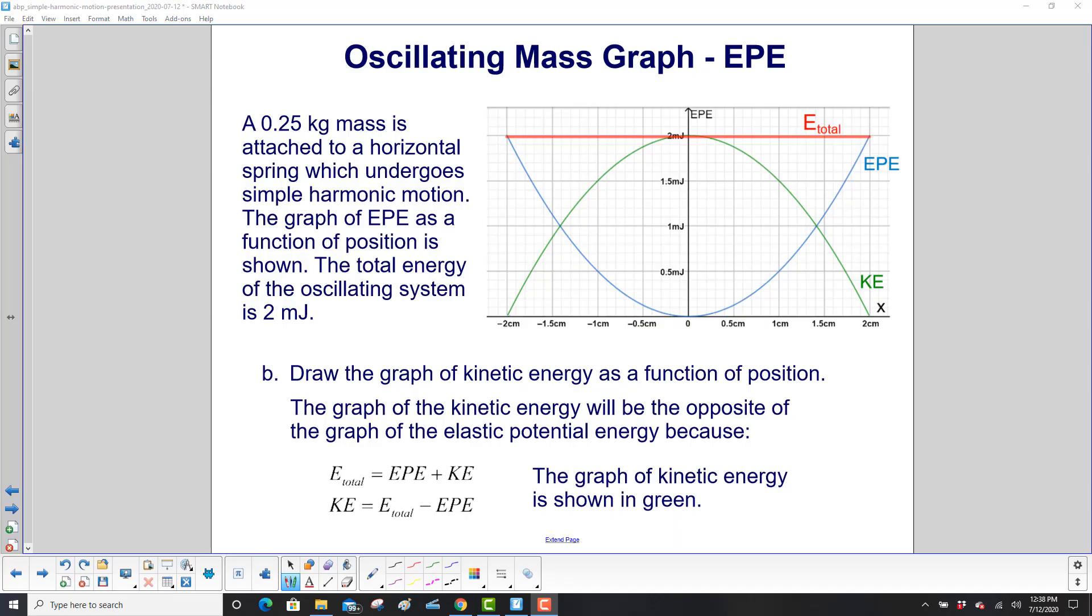Draw the graph of kinetic energy as a function of position. The graph of kinetic energy will be the opposite because the kinetic energy is the total energy minus the elastic potential energy. So let's just plot a couple points to sort of prove this. At this point here, you have a maximum EPE and there's no room for kinetic energy. So kinetic energy is down here at zero.